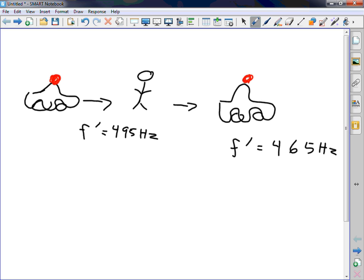Now the frequency drops. It drops. So now I've got a frequency, I don't know, it's just 465 hertz. From that information right there, I want you to calculate the velocity of the police car. That's all I'm going to give you. How am I going to do this?